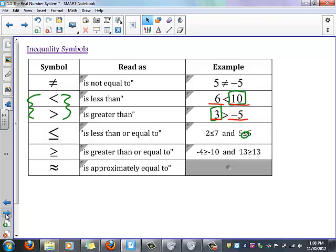This last one is approximately equal to. So this is going to be when you're rounding or close. For example, pi is approximately 3.1415. We can use that approximation when dealing with it.